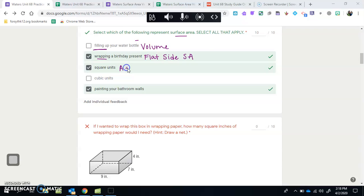For area we use base times height, and that's two dimensions, which is why we have inches squared or feet squared, or square units in general. So this is also surface area, which is why they checked it. Cubic units are for volume because that's length times width times height - that's three dimensions. So that's why we use inches cubed or feet cubed or cubic units. Painting your bathroom walls is talking about the flat surface of your wall, so that's surface area.